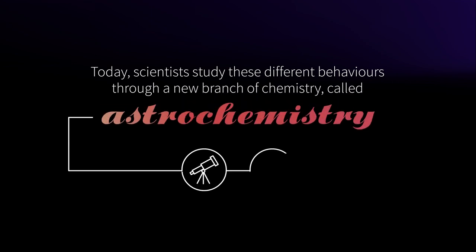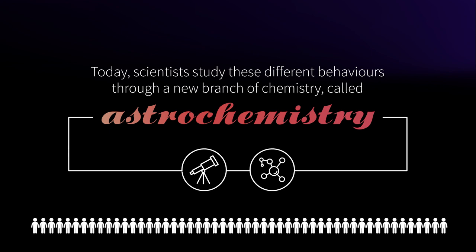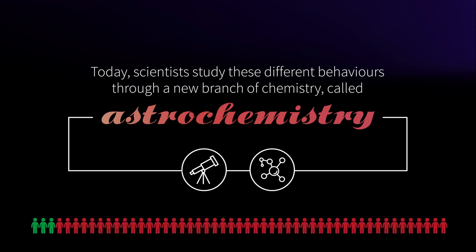Today, scientists study these different behaviours through a new branch of chemistry called astrochemistry. It is still a very young field of research compared to chemistry and not many people know about it yet. A recent survey of 50 students aged 11 to 14 found that only 6% of them had even heard of astrochemistry.